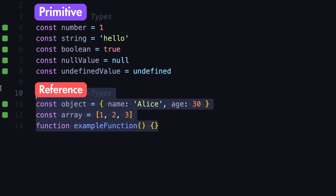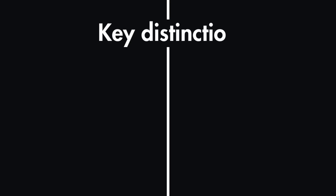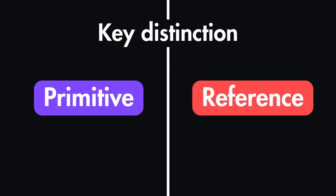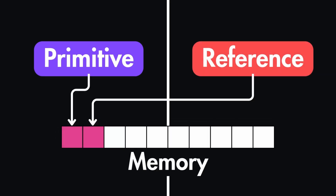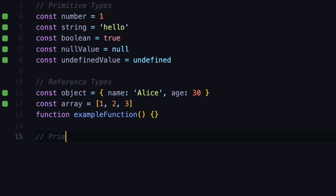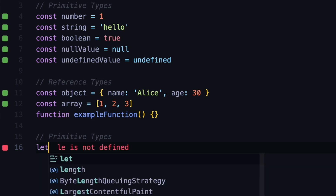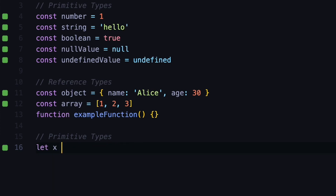These are called reference types in JavaScript, and there is one key distinction between reference types and primitive types — that is how these types are assigned and copied in memory. First, let's start with primitive types. When you assign a primitive value to a variable, let's say you have a variable x and you assign a primitive type like the number 5, a copy of this value is created and stored in the variable's memory location.